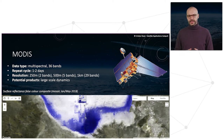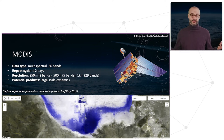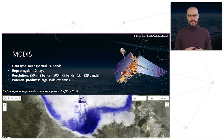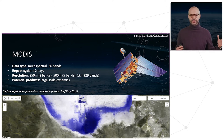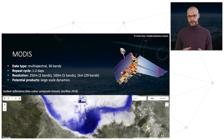MODIS is another very popular mission — multispectral with a larger number of bands, 36 in total. The repeat cycle is shorter at 1–2 days, but the spatial resolution is coarser, from 250 meters to 1 kilometer. This makes it quite good for observing large-scale dynamics of the Earth.